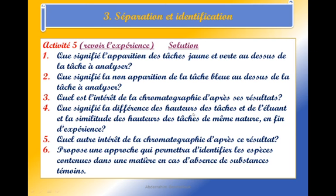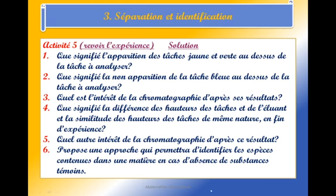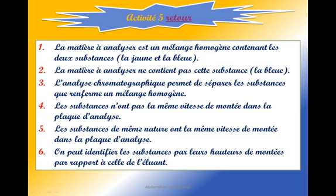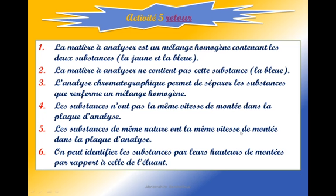Que signifie la différence des hauteurs des taches de l'éluant et la similitude des hauteurs des taches de même nature en fin d'expérience ? Les taches ne sont pas montées à la même hauteur — la plus grande est celle de la tache jaune — et l'éluant a parcouru une distance plus grande. Cela signifie que les substances n'ont pas la même vitesse de montée dans les plaques d'analyse. Les substances de même nature ont la même vitesse de montée.